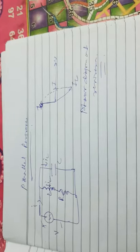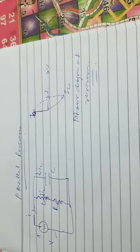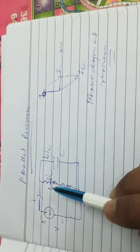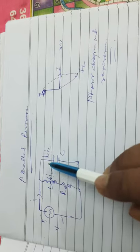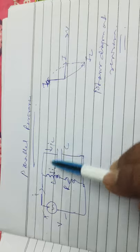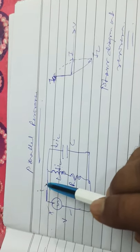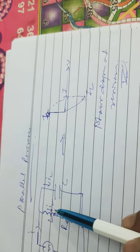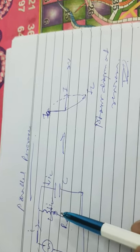Today we will discuss parallel resonance, continuing from the previous lecture. Here we have drawn the circuit. You can see that the AC source is connected to L and R. L and R have been connected in parallel to C. Here the current is IC, here it is IL, and here we can see the current is I. This is the corresponding phasor diagram at resonance. Parallel resonance is said to occur in a circuit containing an inductor in parallel with a capacitor.